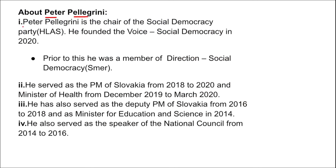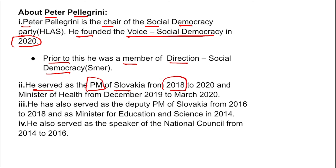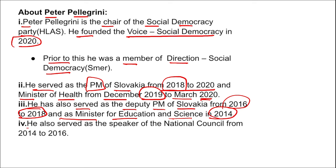Peter Pellegrini is the Chair of the Social Democracy party. He founded Voice Social Democracy in 2020. Prior to this, he was a member of Direction Social Democracy. He served as Prime Minister of Slovakia from 2018 to 2020, Minister of Health from December 2019 to March 2020, Deputy Prime Minister from 2016 to 2018, Minister of Education and Science in 2014, and Speaker of the National Council from 2014 to 2016.